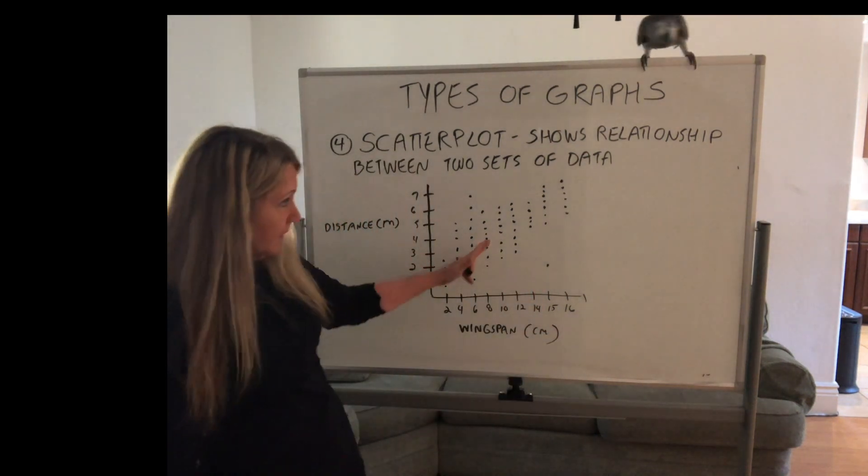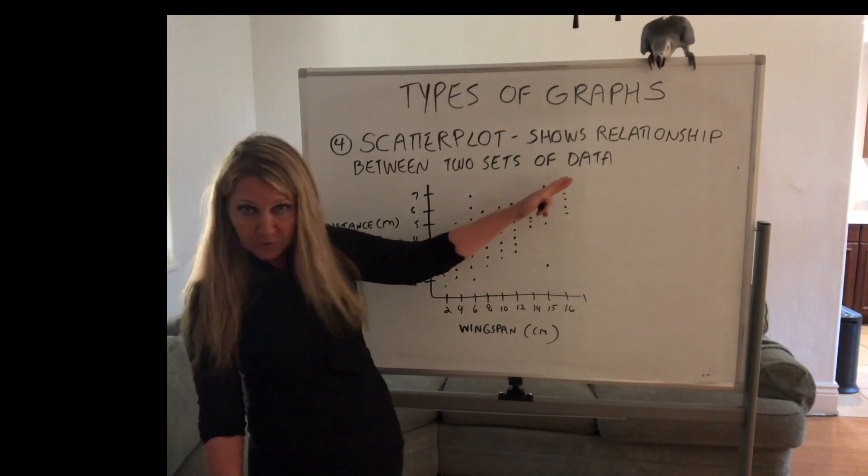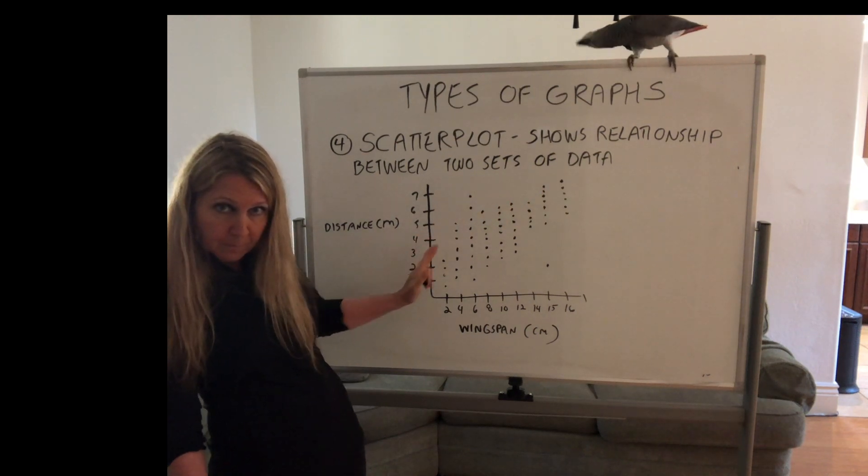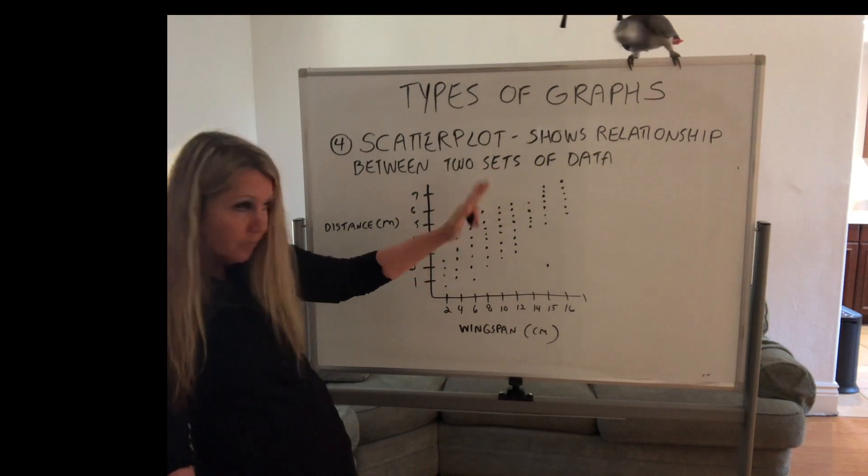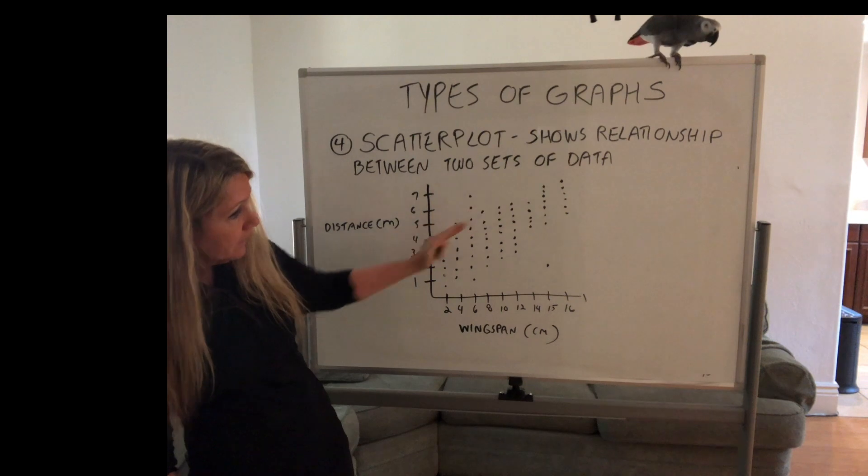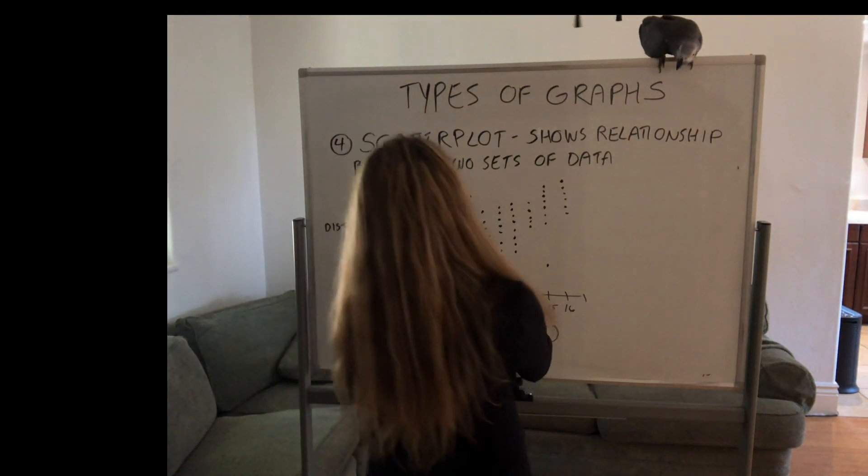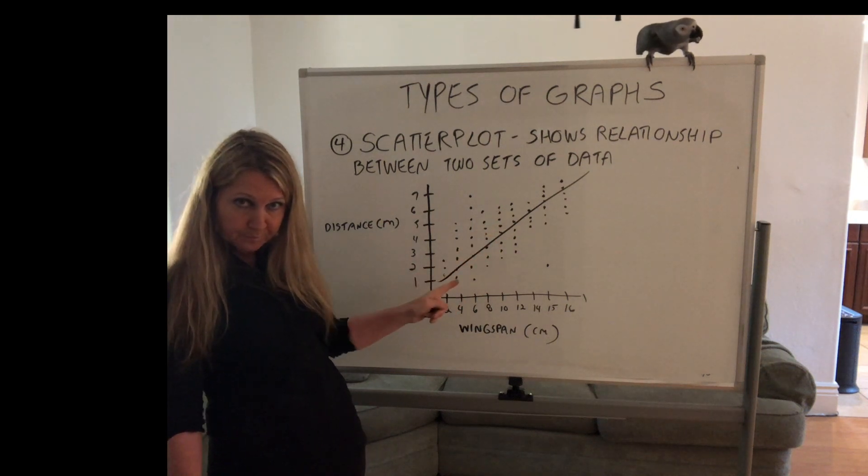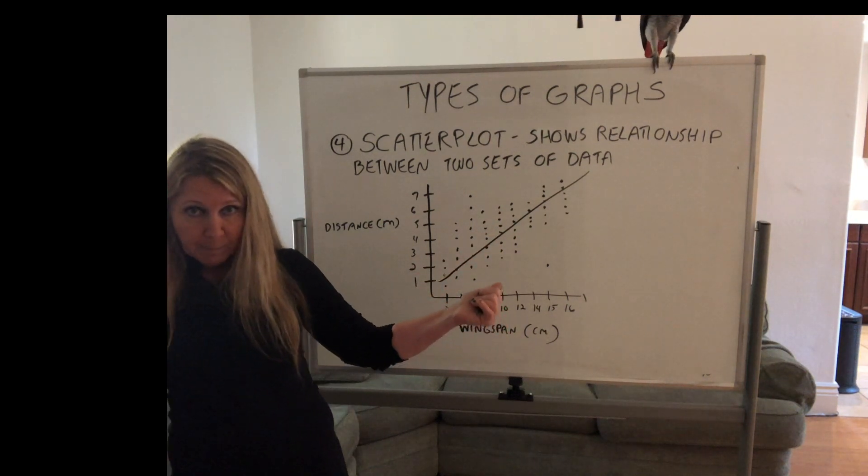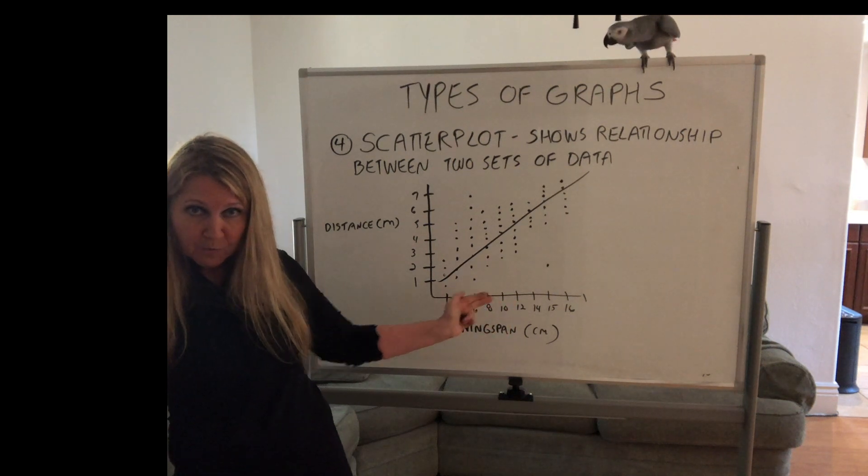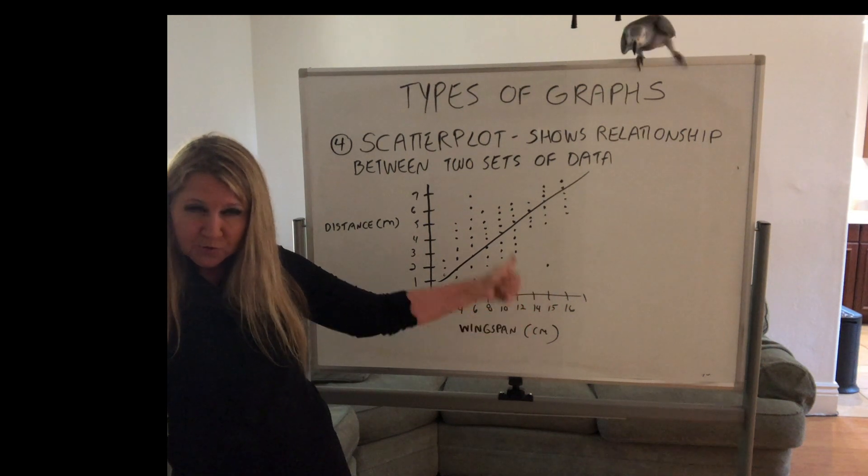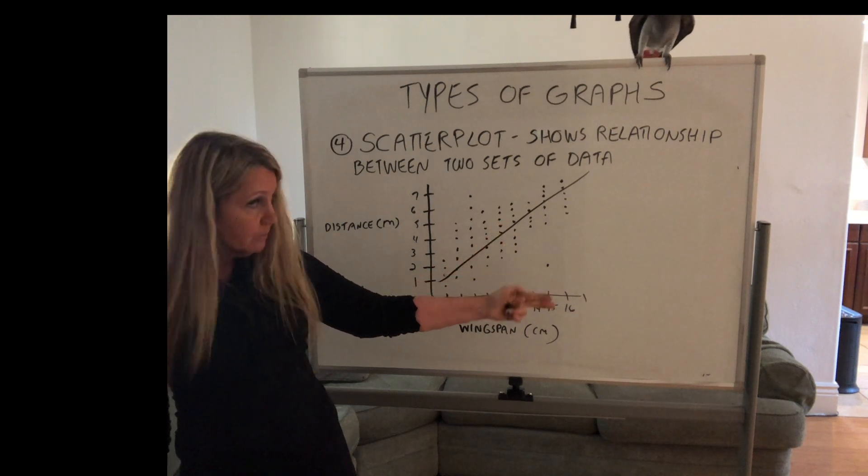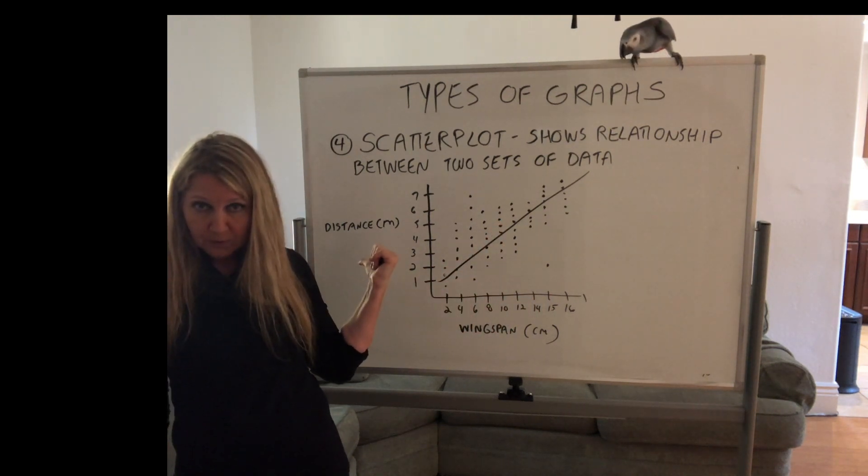We can see, just by looking at this, we can see a general upward trend. You can see the data generally is going up. Positive slope in general. So we're going to create a line that's about the average of all of this data. So let's say this is our line of best fit. It's obviously a positive correlation. So if the wingspan increased, the distance traveled also increased. Okay? As you decrease the wingspan, the distance traveled decreased.